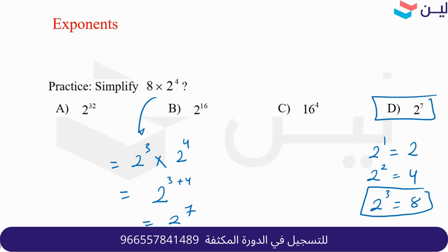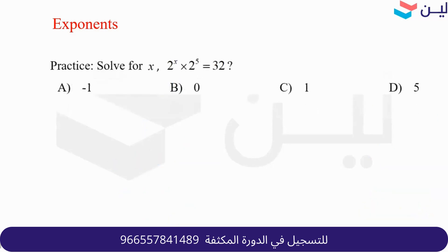The idea is you have to change the bases in order to apply the rule. Now solve for x: 2 to the x times 2 to the fifth equals 32. This is similar to the one before. Can I change 32 to be 2 to something?